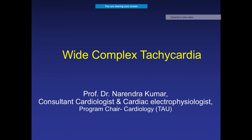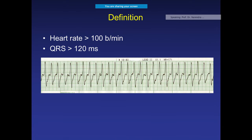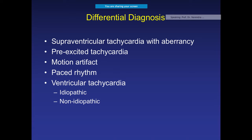Today we are going to speak about a really important topic: wide complex tachycardia. We speak about it because most of the time it is an emergency. The definition of wide QRS tachycardia is a heart rate more than 120 bpm and a QRS width more than 120 milliseconds. This is how you typically identify a wide QRS tachycardia.